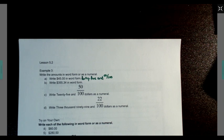Let's take a look at B. $355.34 in word form.